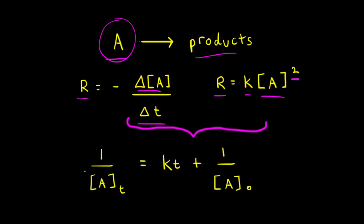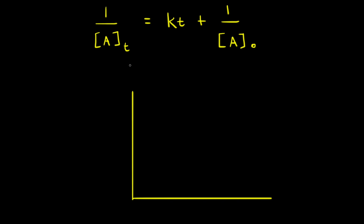The integrated rate law for a second order reaction says that one over the concentration of reactant A at some time T is equal to the rate constant K times the time plus one over the initial concentration of A. Notice how the integrated rate law has the form of Y equals MX plus B, which is the equation for a straight line.